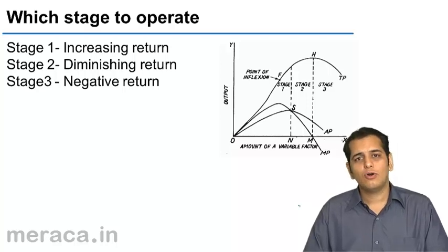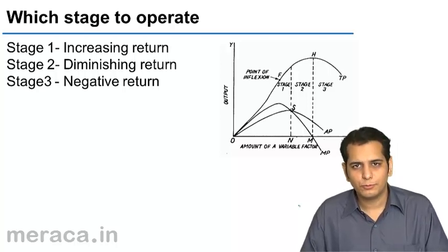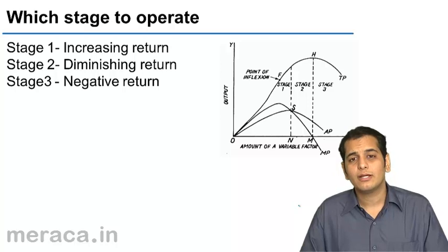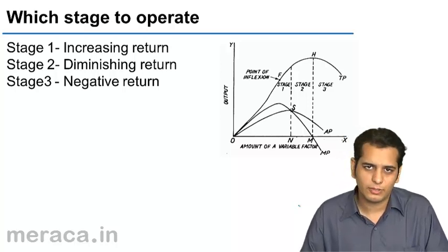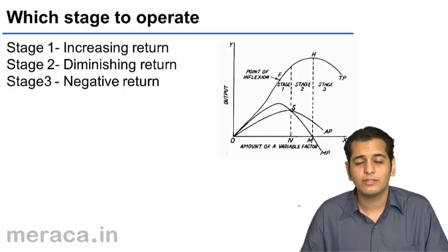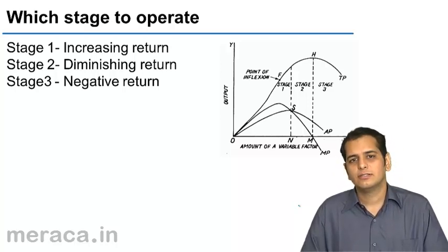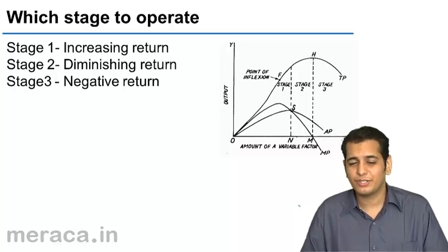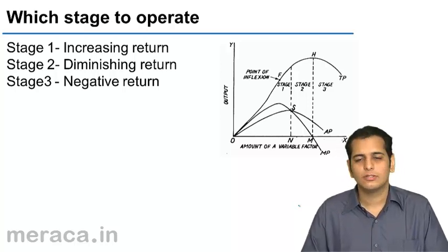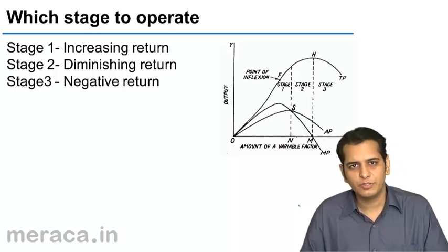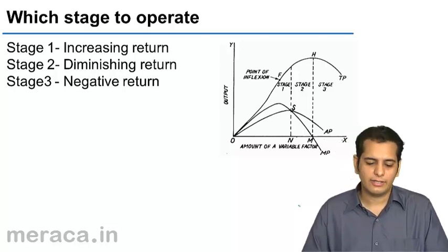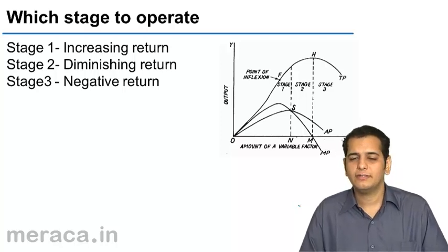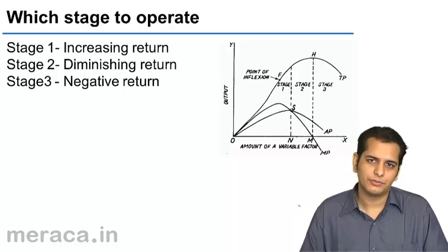After learning the law of variable proportions, we know that there are three stages of production. Stage 1 is the stage of increasing returns, stage 2 is where we get diminishing returns, and stage 3 is where we get negative returns.